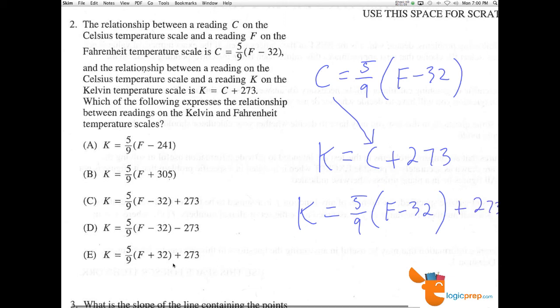I look for that answer, and lo and behold, it is C. The Kelvin temperature is equal to five-ninths times the Fahrenheit minus 32 plus 273. Making Answer Choice C the correct answer.